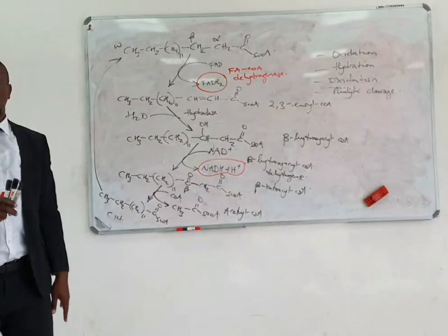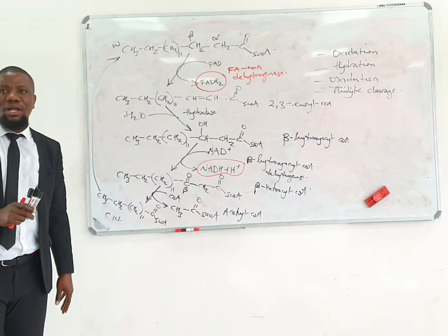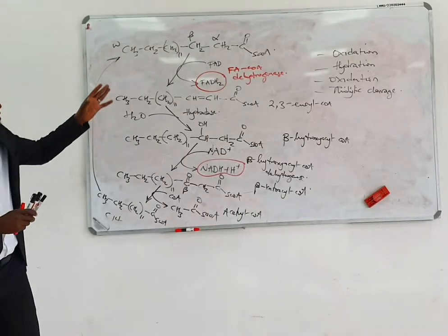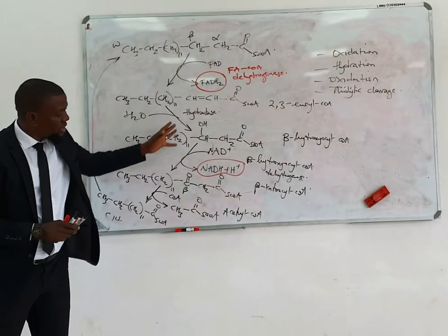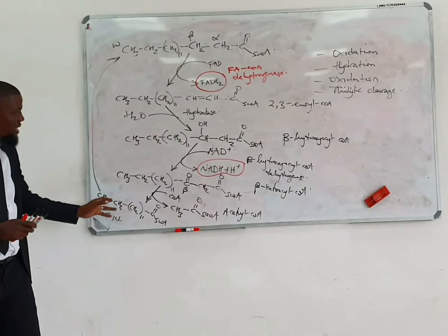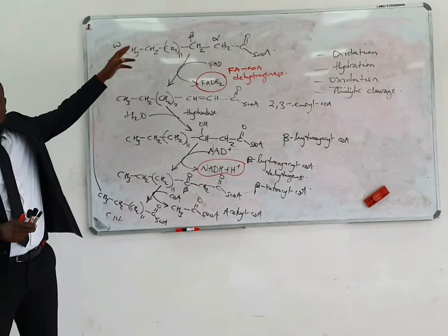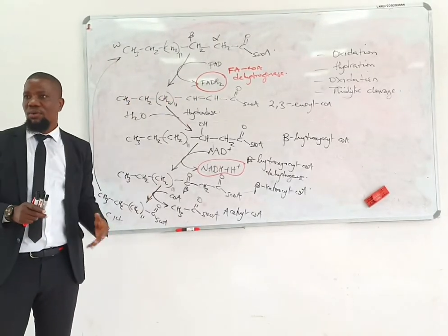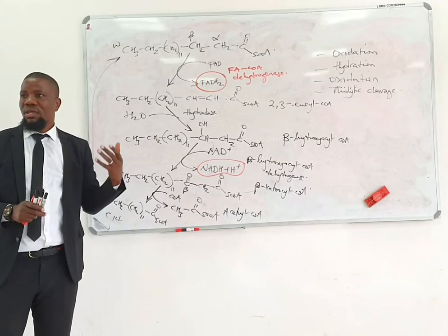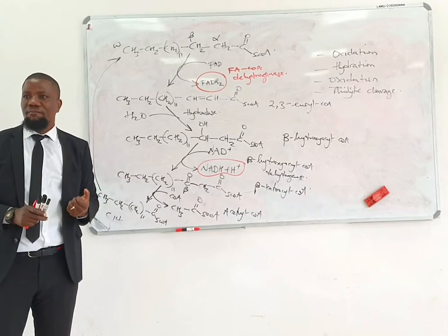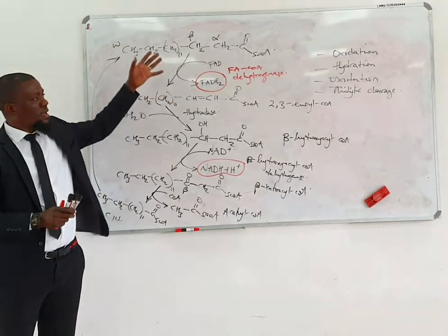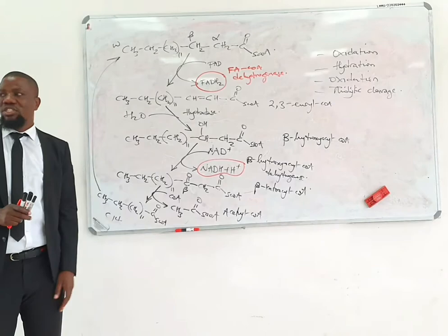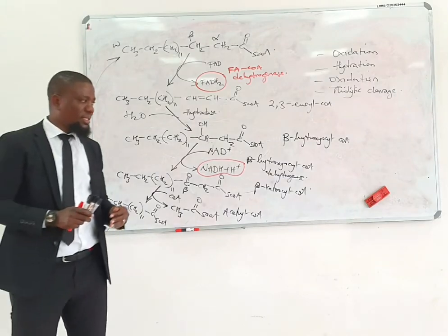This is how beta oxidation occurs. When you explain it in a question, illustrate the process, then explain that the fatty acid will undergo beta oxidation, and tell how many cycles it will undergo. This is the process of beta oxidation.